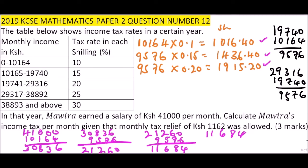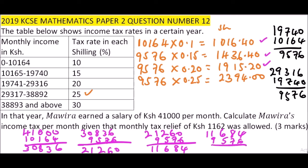Since 11,684 is still more than 9,576, we put 9,576 and multiply by the next bracket rate which is 25 percent, the same as 0.25. When you multiply that you get 2,394.00. We subtract 9,576 from 11,684, and what is remaining is 2,108. We multiply that by 30 percent, which is 0.30.